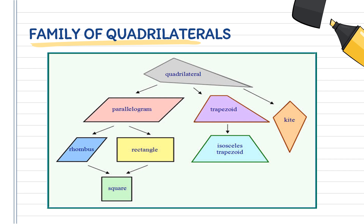As we focus on our parallelogram, we have our rhombus, rectangle, and square. While under trapezoid, we have isosceles trapezoid. Let's go on to the next slide to know more about them.